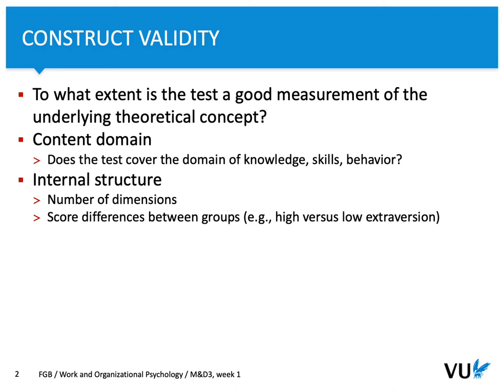Internal structure is an important part of construct validity. It can be related to the number of dimensions and also to scores and differences between groups. The number of dimensions is typically assessed through complex statistical analysis. So, if we create a test to measure self-control and trait self-control based on our theory should be unidimensional — should have one factor — then through statistical analysis we should get data indicating only one dimension. If we create a test that should differentiate between different groups, such as healthy and ill individuals, statistical analysis should identify those differences.